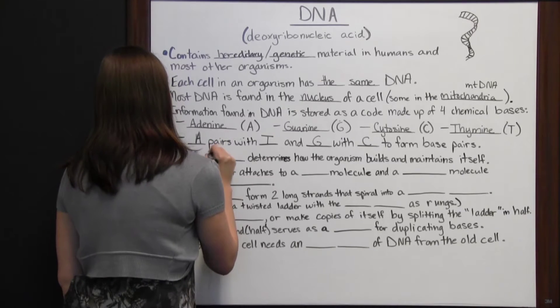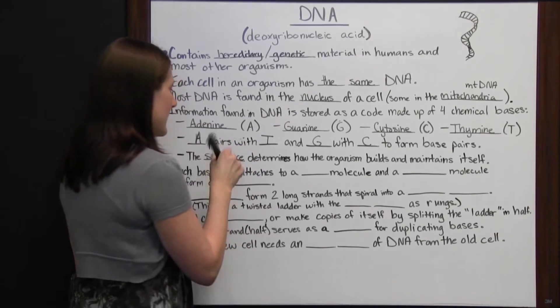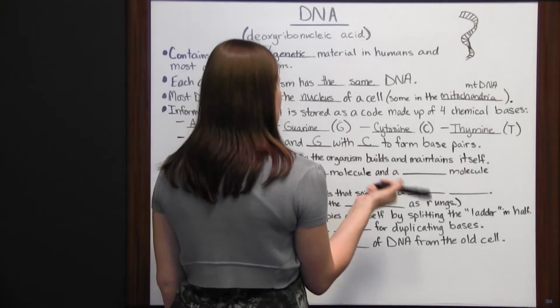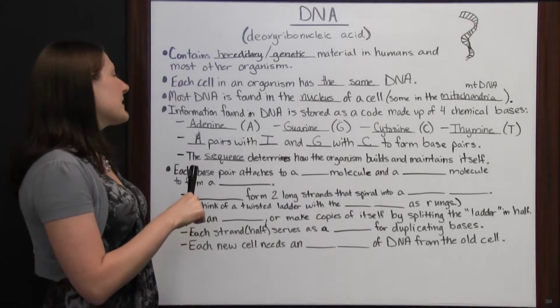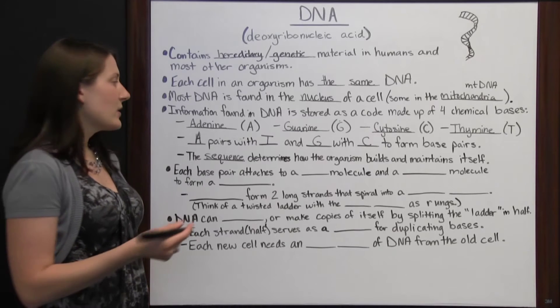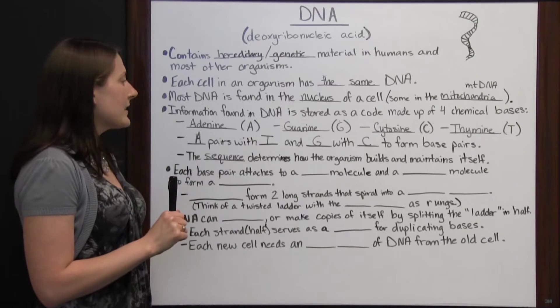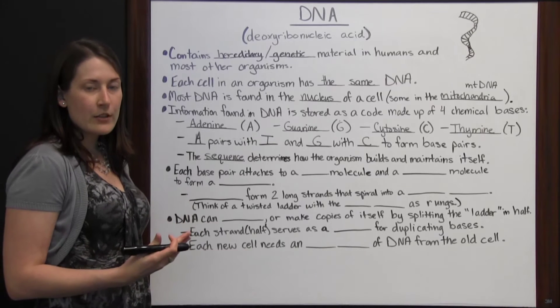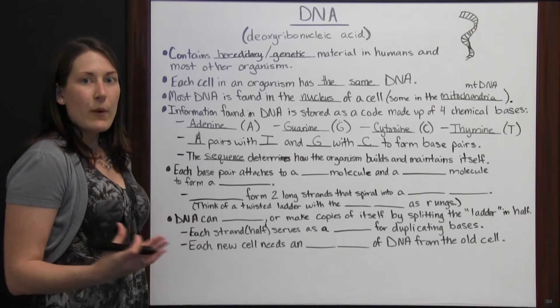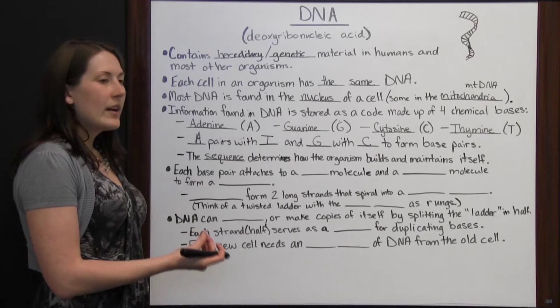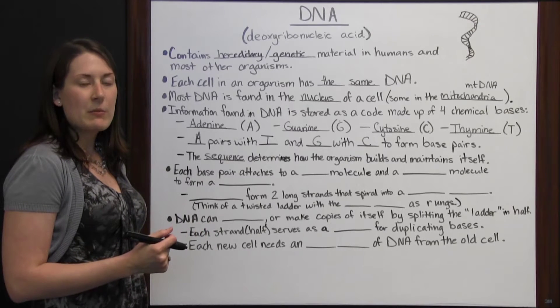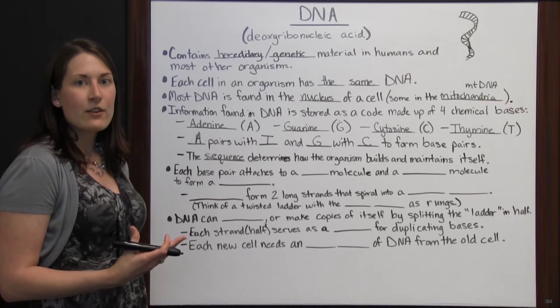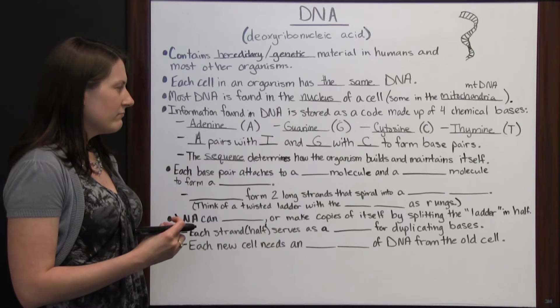The sequence of the adenine, thymine, guanine, cytosine pairs determines how the organism builds and maintains itself. It's important to think about this. Not every organism or every person is going to have the exact same sequence of base pairs. You might think of the alphabet. We use 26 letters to form all of our words and sentences, but the way that they're arranged, the sequence of those letters is what lets us know what word is being communicated, what sentence is trying to be communicated. Each word has a different meaning, even though it's made up of the same 26 letters or some subset of those letters.